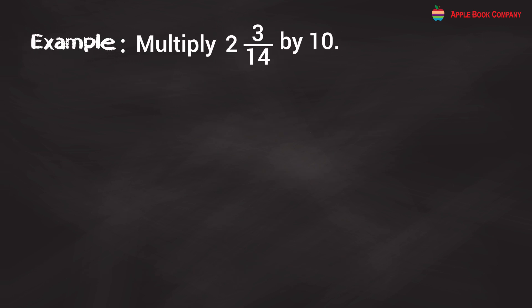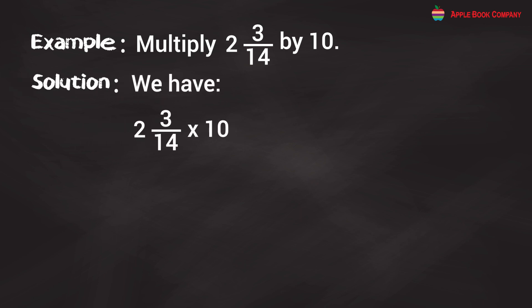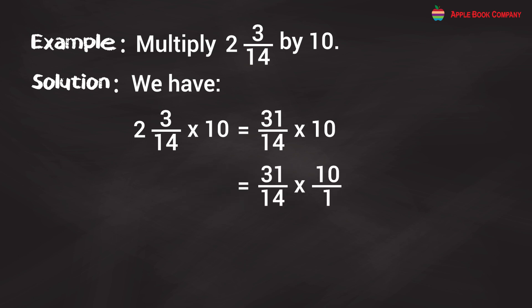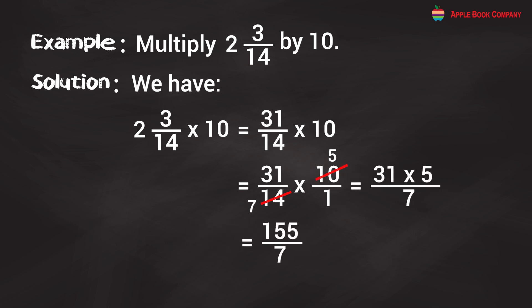Example: Multiply 2 and 3/14 by 10. Solution: 2 and 3/14 × 10 = 31/14 × 10 = 31/14 × 10/1. We can simplify by cancelling: 14 and 10 share a factor of 2, giving 31 × 5 / 7 = 155/7 = 22 and 1/7.